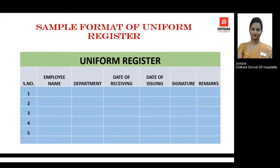This is a sample format of the uniform register. Once the slip is completed and the uniform has been handed over to the employee, this information is recorded in the uniform register. It includes the employee name, department, date of receiving the uniform, details of the uniform numbers and parts handed over, plus the employee's signature. This record is maintained for all employees across all departments in the hotel.